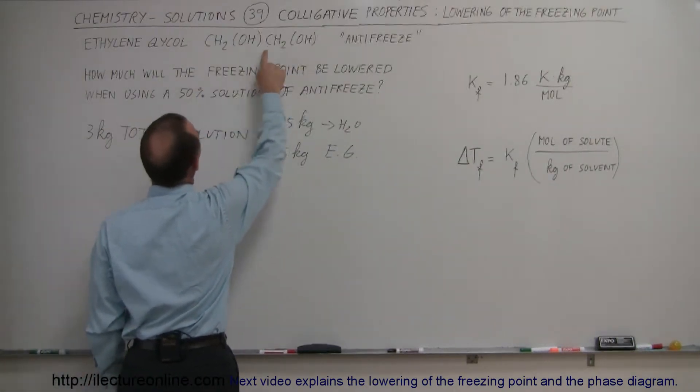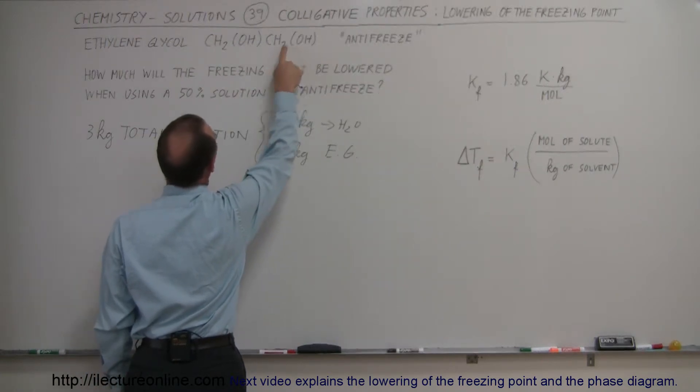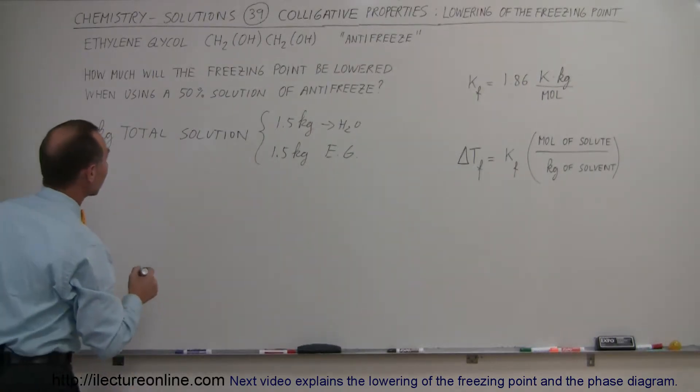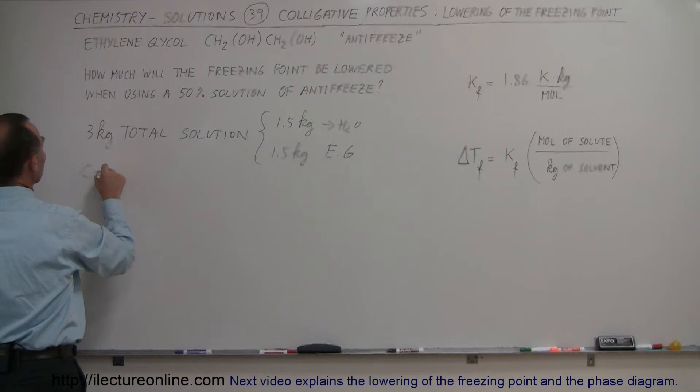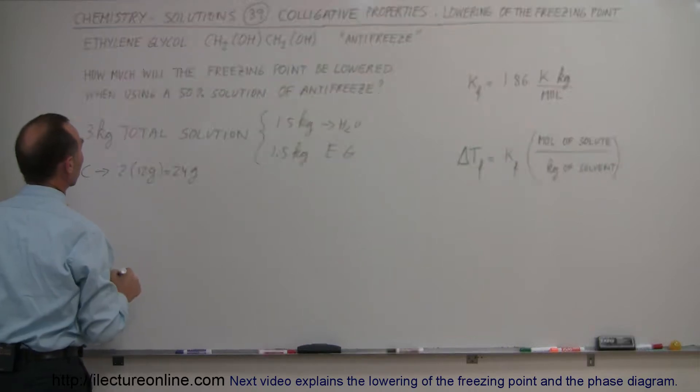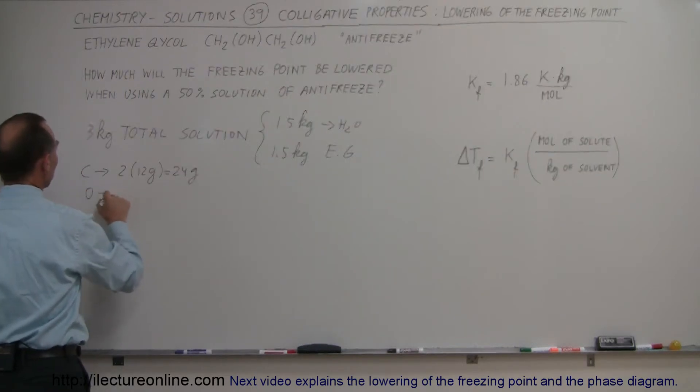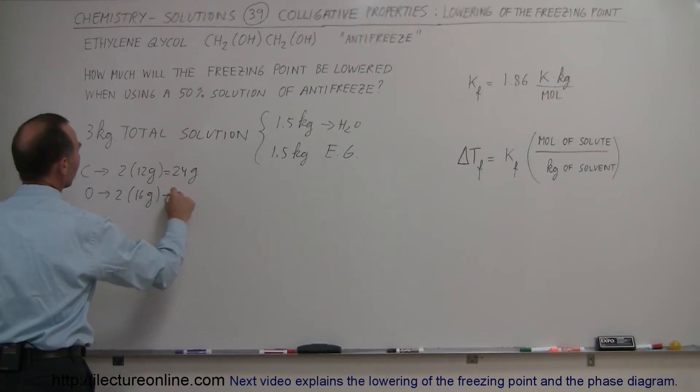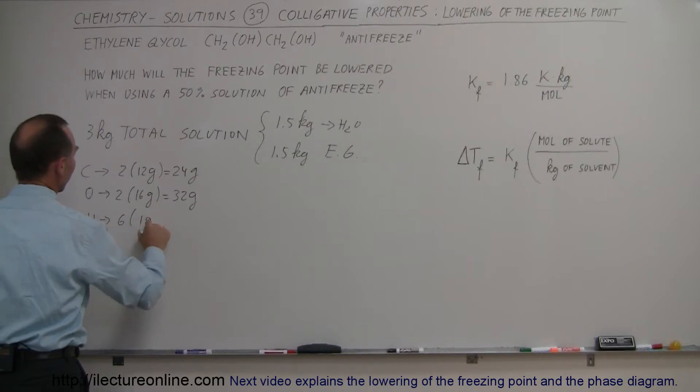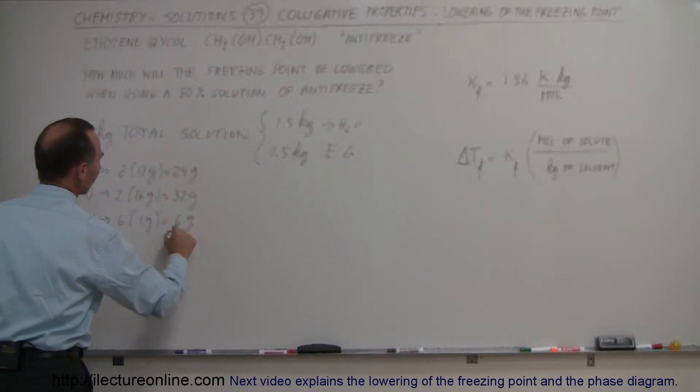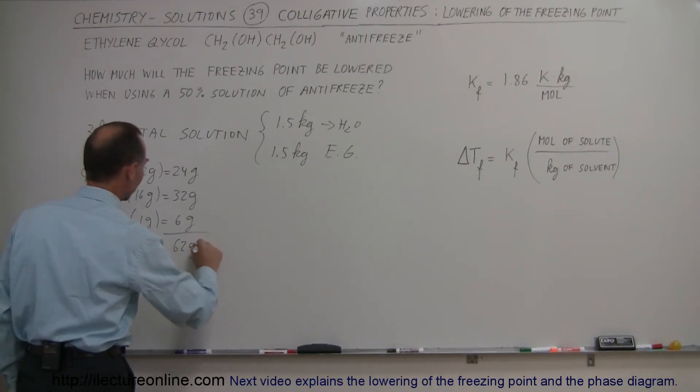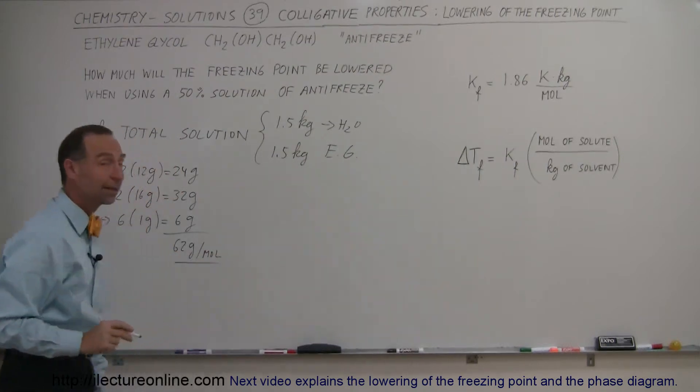In ethylene glycol, we have two carbon atoms, two oxygen atoms, and six hydrogen atoms. Let's find out what the molar mass is. For the carbon, we have two times 12 grams, that's 24 grams per mole. For the oxygen, we have two times 16 grams, or 32 grams per mole. And for the hydrogen, it's six times one gram, or 6 grams. When we add it all together, that's 62 grams per mole. That's the molar mass for ethylene glycol.